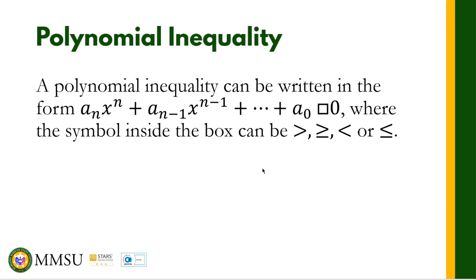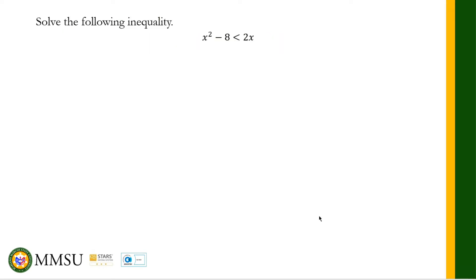Polynomial inequalities can be solved using factoring. To illustrate, we're going to answer two problems. For the first one, let's solve x squared minus 8 is less than 2x. The first step in solving any polynomial inequality is to write an equivalent expression having all non-zero terms on one side. So we get x squared minus 2x minus 8 is less than zero.